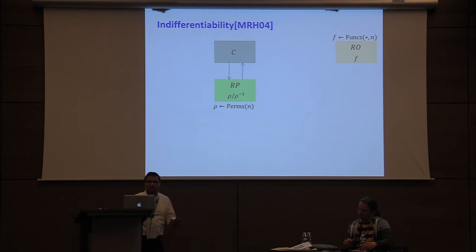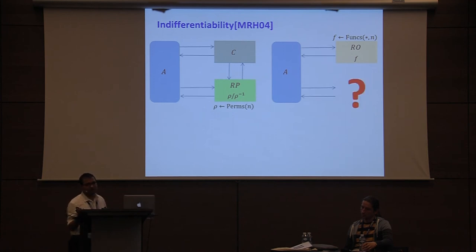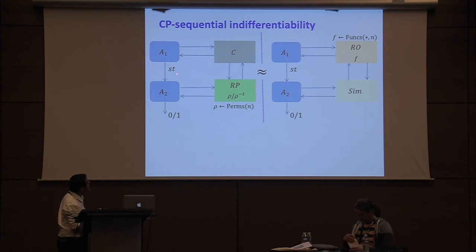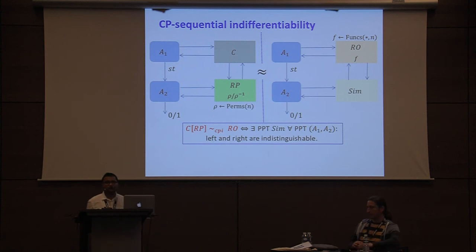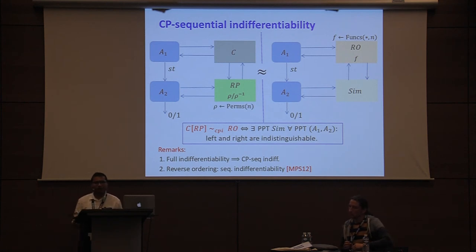Indifferentiability in the traditional sense considers a construction C that uses a random permutation as its primitive, and we want C to behave like a random oracle in a setting where the adversary can query both the construction and the primitive. We restrict this notion further by requiring the adversary to make all its construction queries first and then move on to primitive queries — this we call CP sequential indifferentiability. Full indifferentiability implies CP sequential indifferentiability. If you reverse the ordering, allowing primitive queries first, that notion is called sequential indifferentiability, which is incomparable to ours.